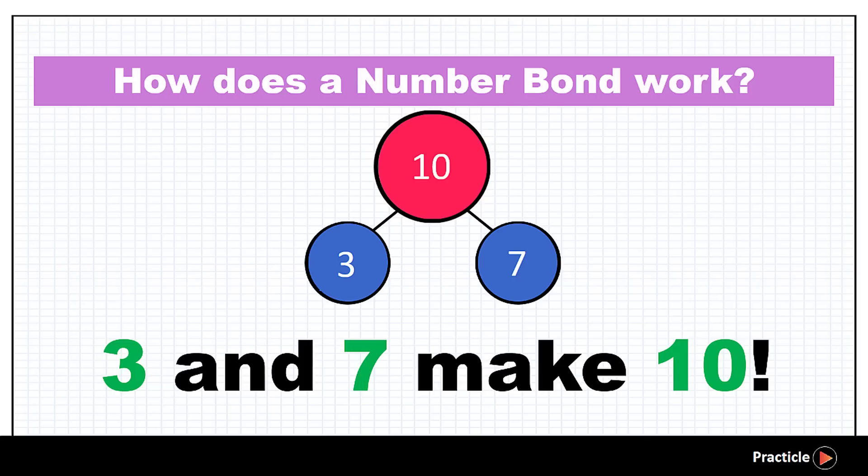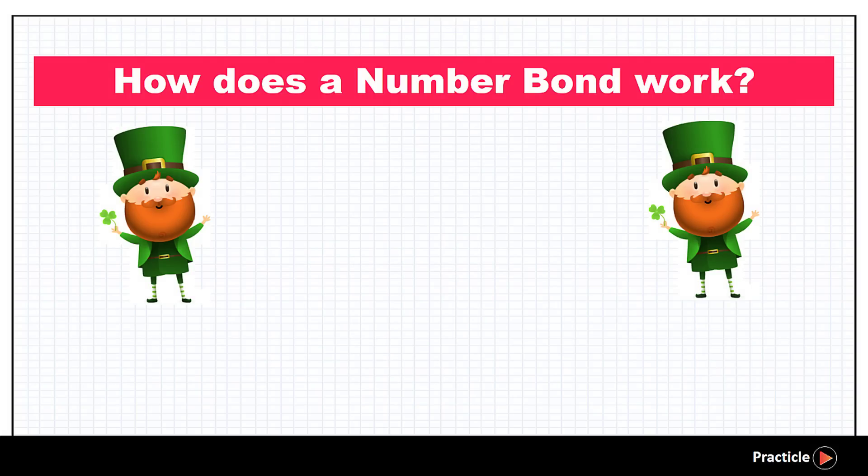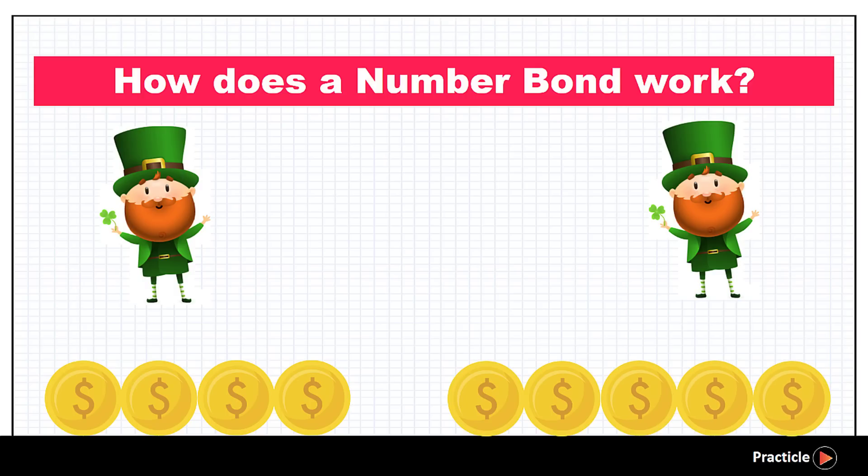Let's look at another number bond example, alright? So that you can be really sure about how they work. This time round, we have 4 shiny gold coins and 5 shiny gold coins. So do we call each of them a part or a whole? If you said each of them is a part, great job at paying attention. Since we know that number 4 is a part, and the number 5 forms another part, we put the numbers in the circles that represent the parts.